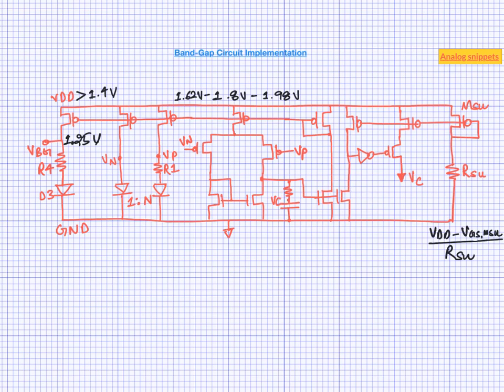One may be tempted to turn off the startup current generation branch as well along with this branch to save the power. But I must caution against it. It should never be done. If it is done, then it may result in a stuck state in the circuit.